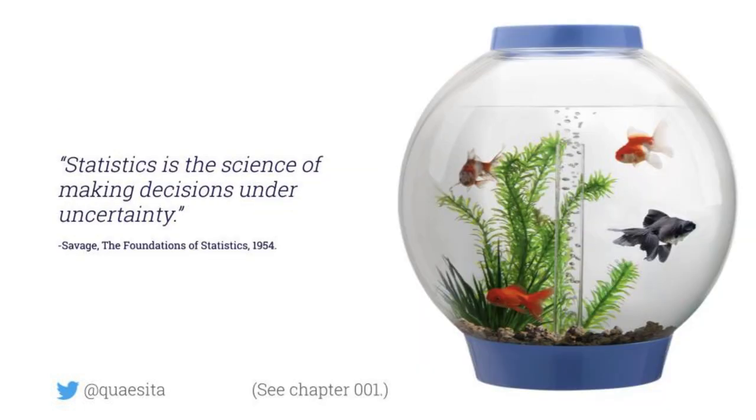Statistics is the science of making decisions under uncertainty. That uncertainty bit is really important. The making decisions bit is also crucial.